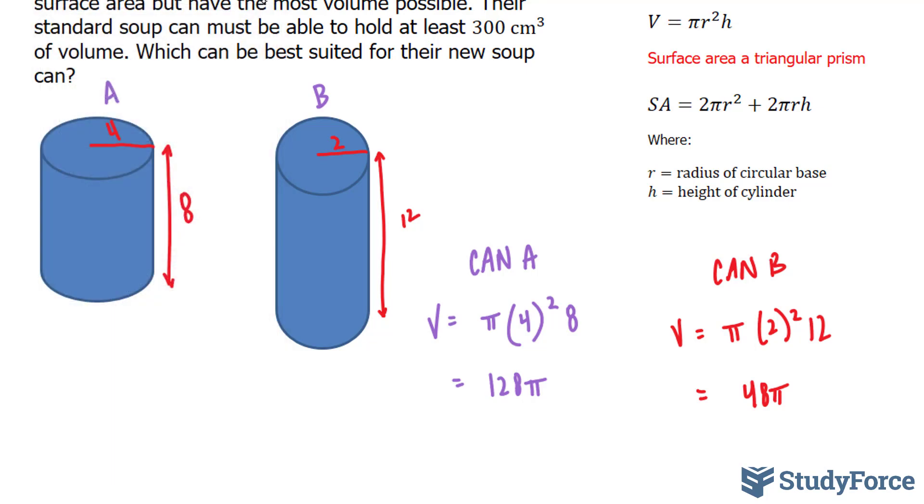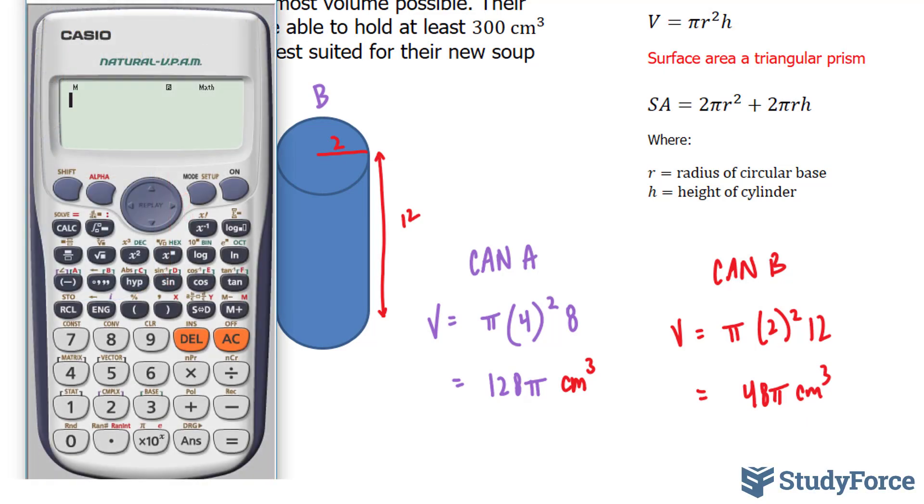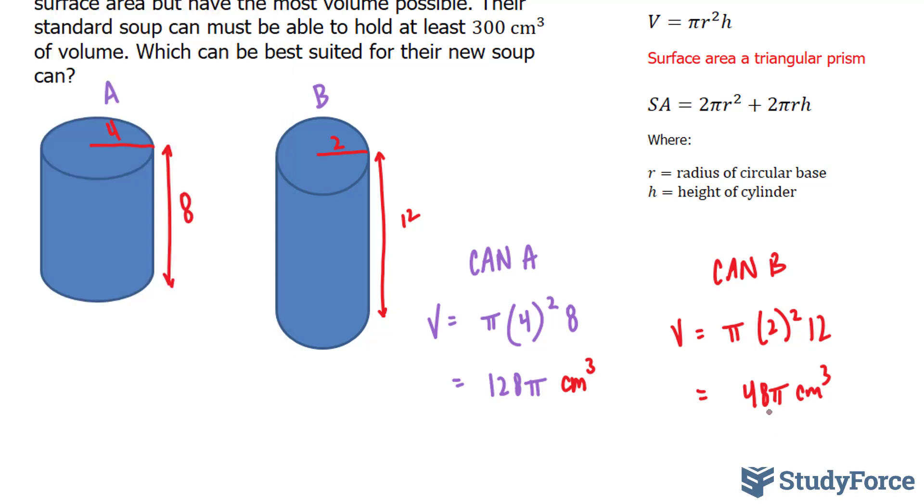Now, both of these values have a unit of centimeters cubed. And so far, let's see if any of these is suited for Campbell's. Well, we know that this is suited for Campbell's because 128 times pi is equal to 402. So this one is suited for Campbell's. But what about can B? 48 times pi gives us 150. So therefore, can B is not allowed.